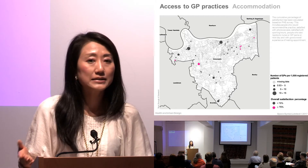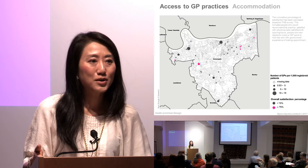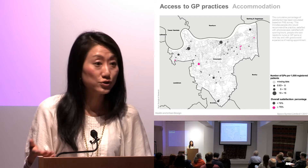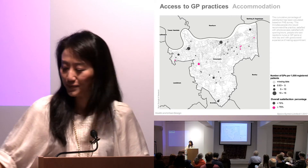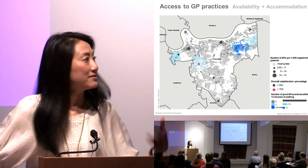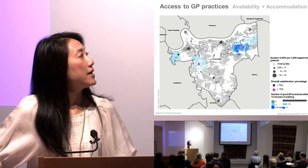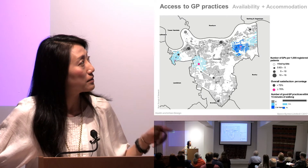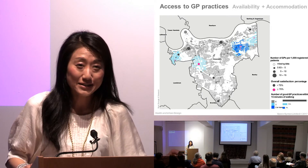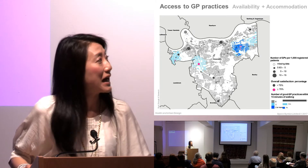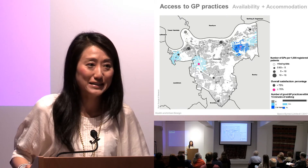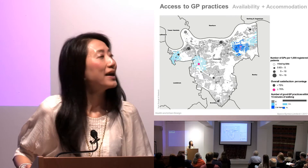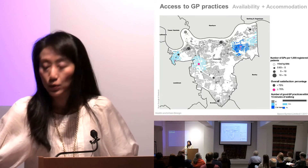This is also relevant when it comes to schools — people do not just want to go to any school, but might want to choose better schools. Using the same techniques, we can calculate that. In this case, dark blue shows that 7% of households in Greenwich have access to good GP surgeries, rated in the top quarter, within 15 minutes walking distance.